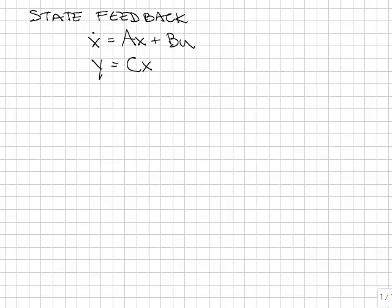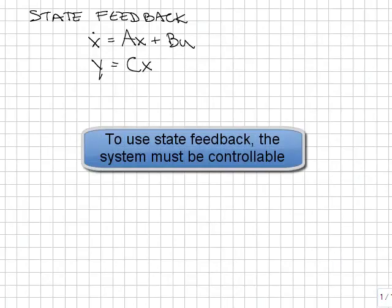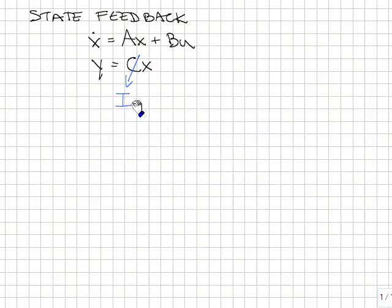A special type of proportional feedback when you have a state-space system is called state feedback, and it can be done when the C matrix is the identity. That is, the output directly measures all of the states of the system.